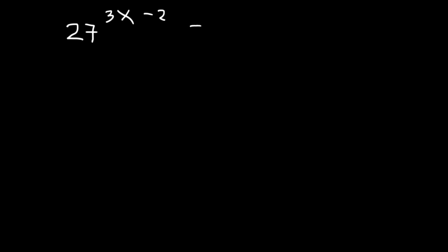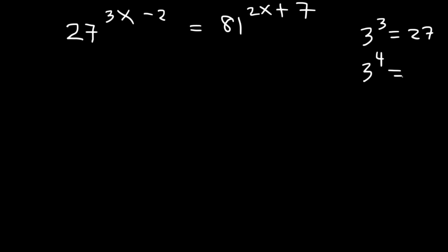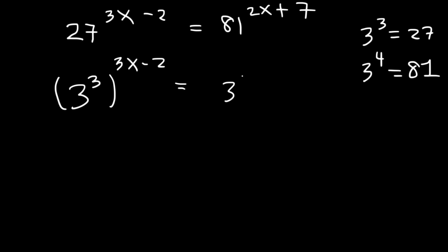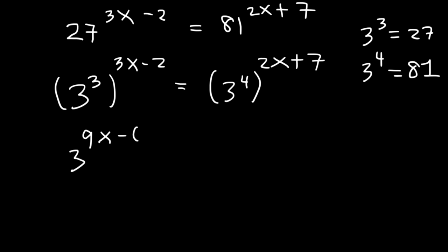Let's try one more example: 27 raised to the 3x minus 2 equals 81 raised to the 2x plus 7. Since 3 to the 3rd power is 27 and 3 to the 4th power is 81, let's replace 27 with 3 cubed and 81 with 3 to the 4th power. Then 3 times 3x minus 2 gives 9x minus 6, and 4 times 2x plus 7 gives 8x plus 28.